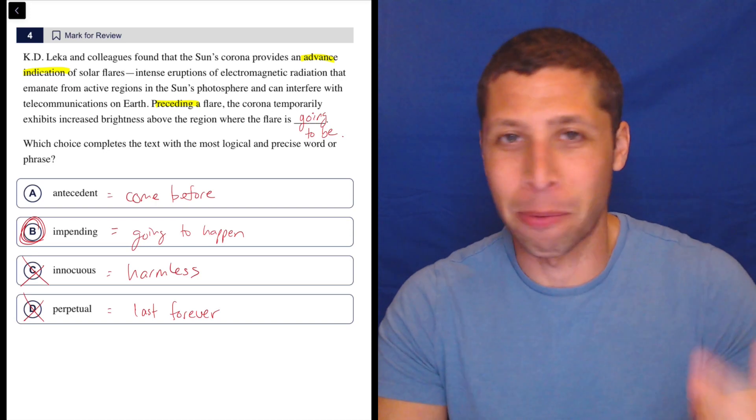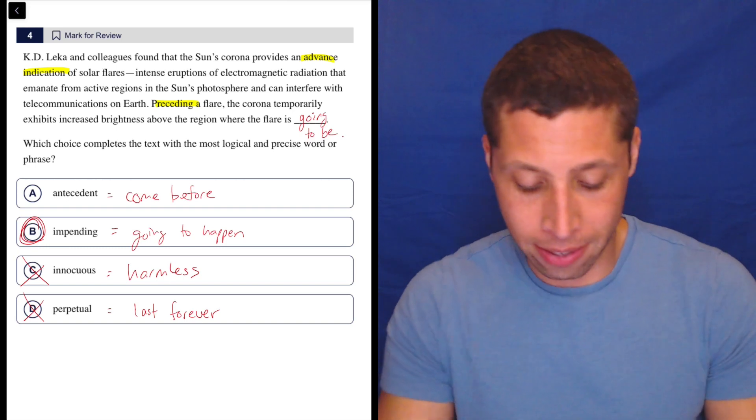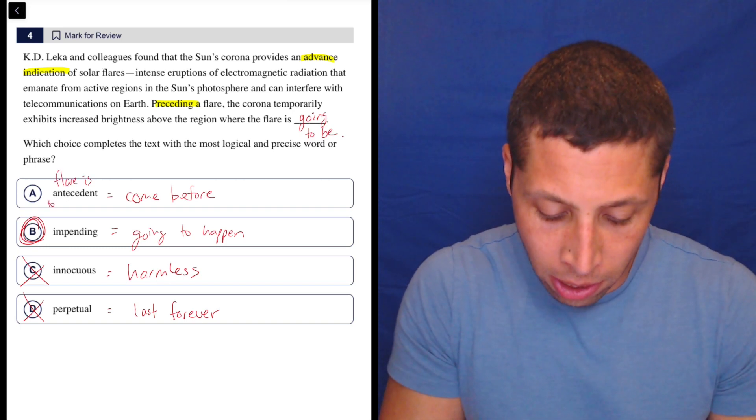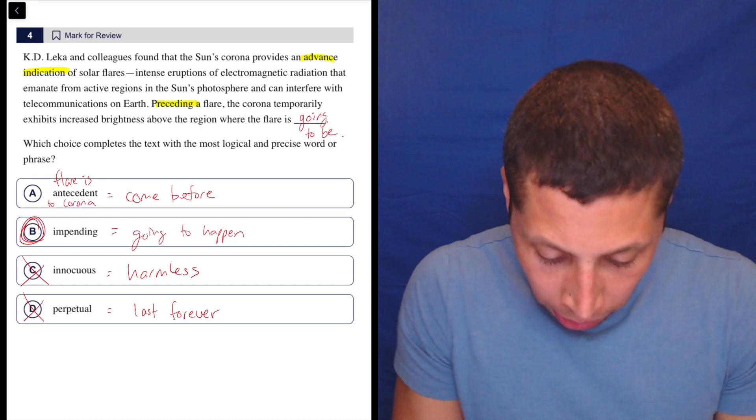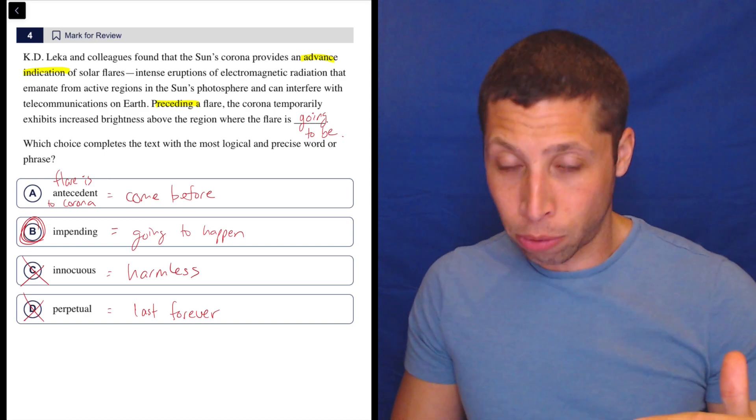The first thing comes first. I'm giving a bad example, but basically if they said the flare is antecedent, if they said the flare is antecedent to the, what is it? The corona. That means first the flare happens, then the corona happens. But we want to say the opposite, right?